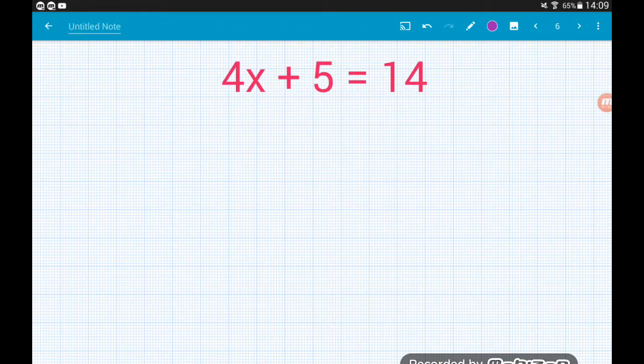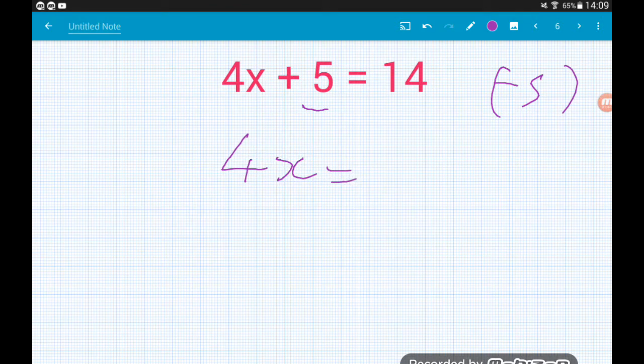Example 2: 4x plus 5 equals 14. We start with this bit. The opposite of plus 5 is to subtract 5. That leaves us with 4x equals 14 minus 5 which is 9. We've got 4 times our number equals 9. The opposite of multiplying by 4 is to divide by 4.